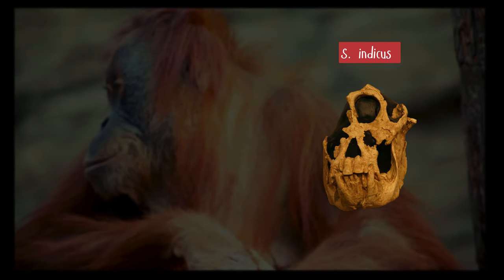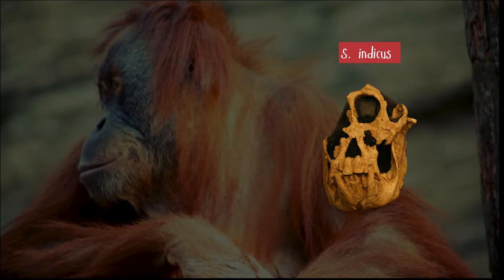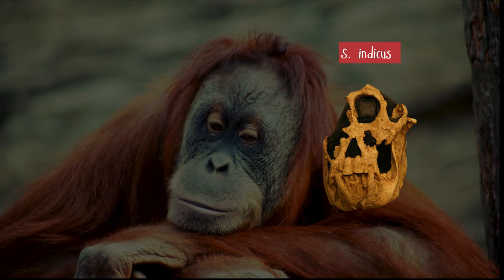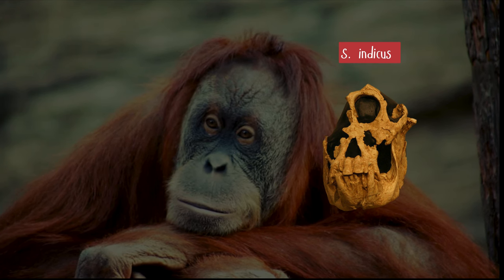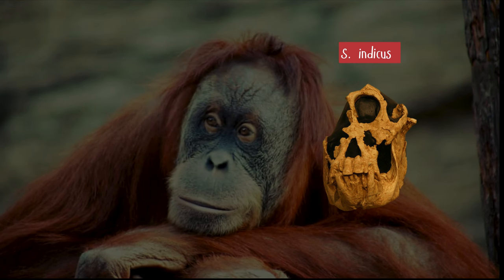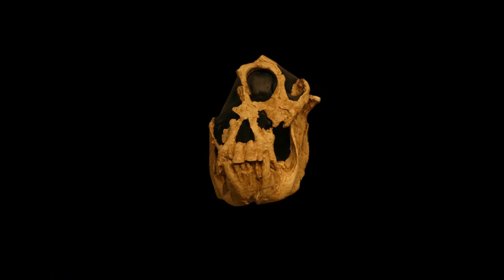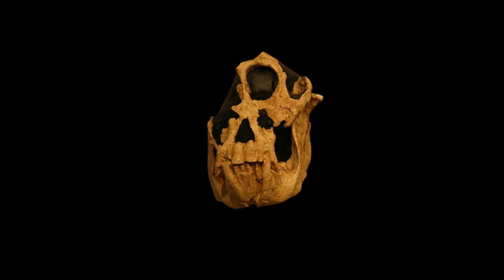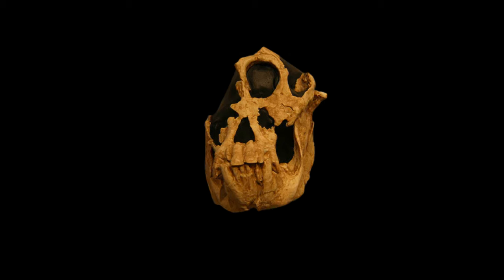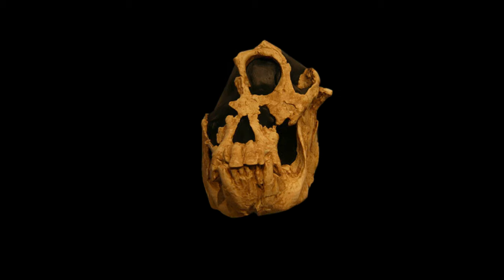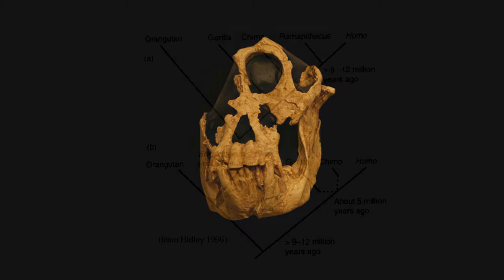The Shivapithecus indicus fossil includes both the face and jaw and shows several similarities with modern orangutans. For instance, its face is concave and oriented upwards, unlike the downward-facing faces of African apes and humans. Additionally, the eye sockets are oval and narrow, there is no brow ridge, the space between the eyes is very narrow, and the area between the nose and mouth is similar to that of modern orangutans.